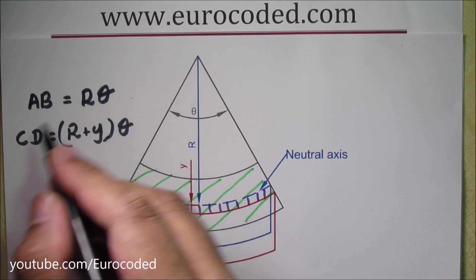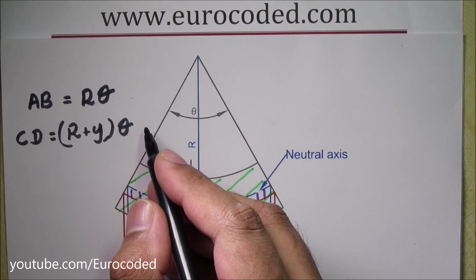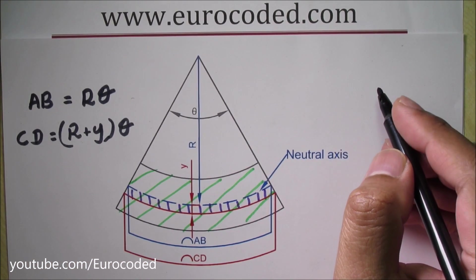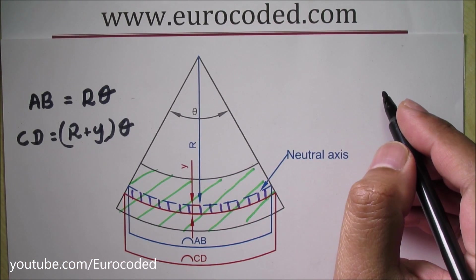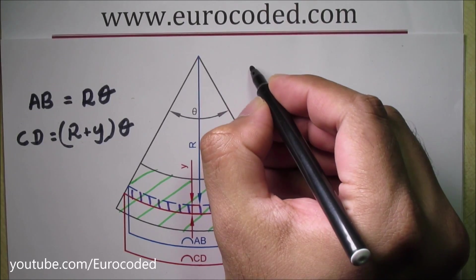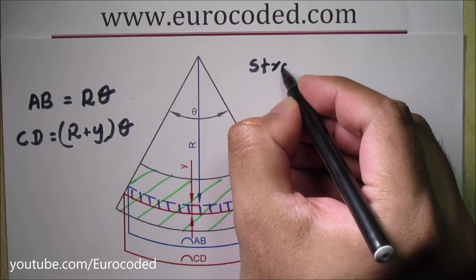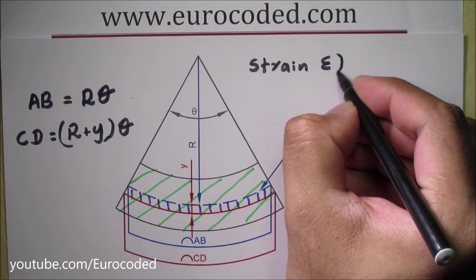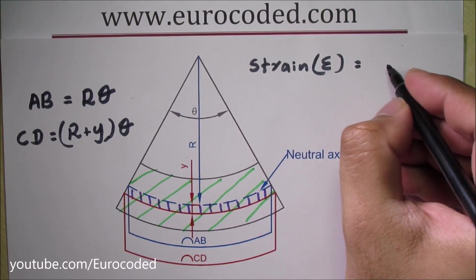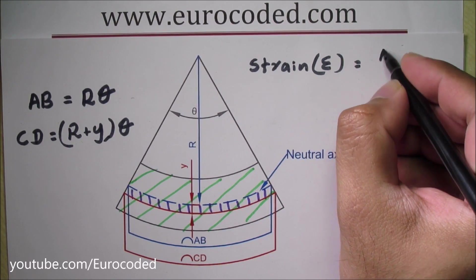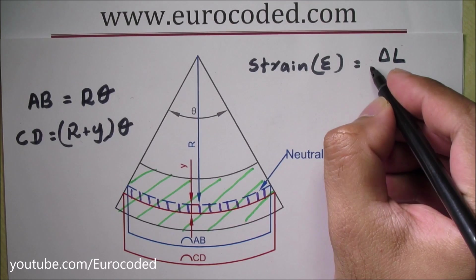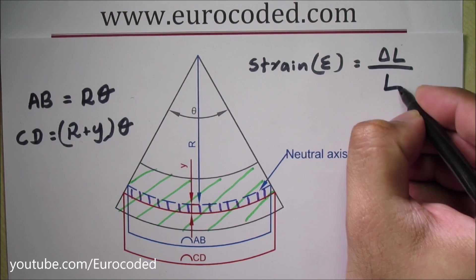Now we need to relate this to strain. Strain is defined as a change in length over original length. So strain epsilon is defined as a change in length delta L over original length.